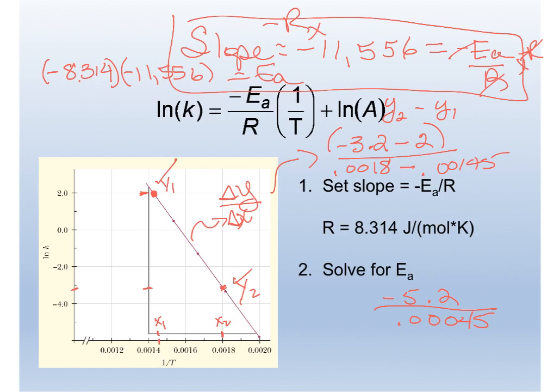I get then the activation energy is 96,000 and by the way activation energy is never negative. It's always a positive number. 96,073, now the units are joules. But most of the time people want you to record this answer in kilojoules. So if we did that it would be 96 kilojoules.